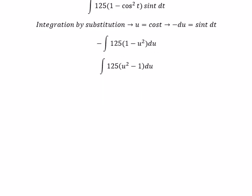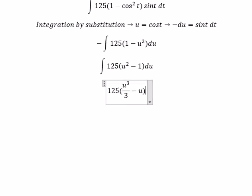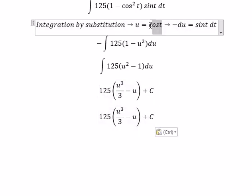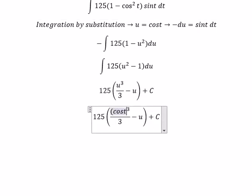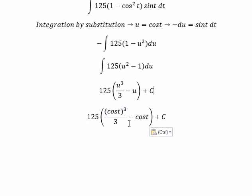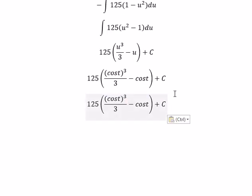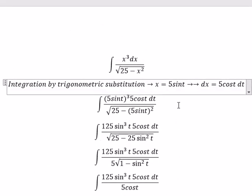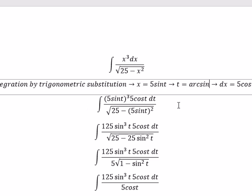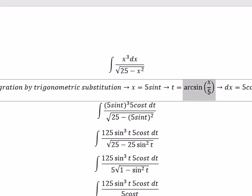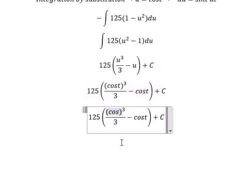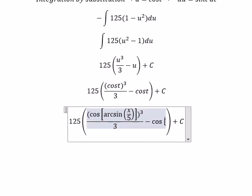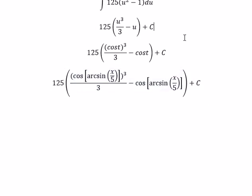Now we get the final answer. For u, that equals sin(t). For t, we need to change back in terms of x. We divide both sides by 5, and we got t equal to arcsin(x over 5). We put this back in here and that is the final answer.